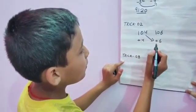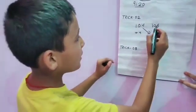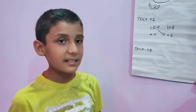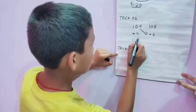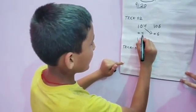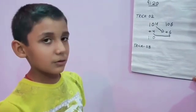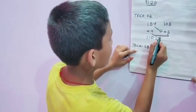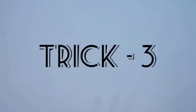104 plus 6 is equal to 110, and 106 plus 4 is also equal to 110. The result is the same, so we write 110 here. Then we multiply the lower digits: 4 multiplied by 6 is equal to 24. We write 24 here. So this is our answer: 11024.